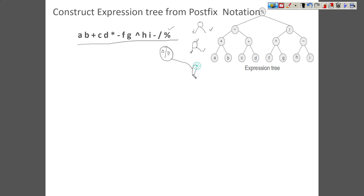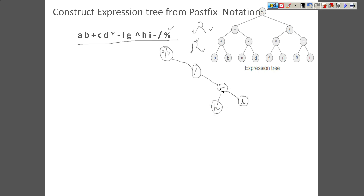We come across the symbol division, which is itself an operator. Whenever we come across an operator we keep on expanding and searching for its operands. This division becomes the right operand for the modulus operator, but since division is itself an operator we keep searching for its operands. An operand is a constant or a variable — once we find such an element we stop. So 'i' is a variable, giving us the right operand. Then we find 'h', which is also an operand, so this sub-expression with the division operator is complete.